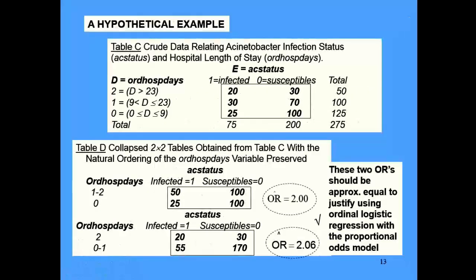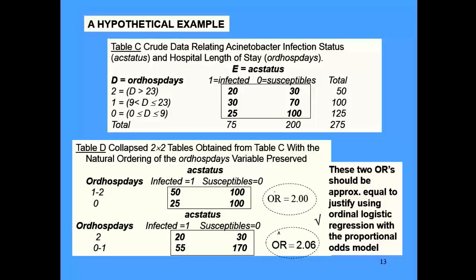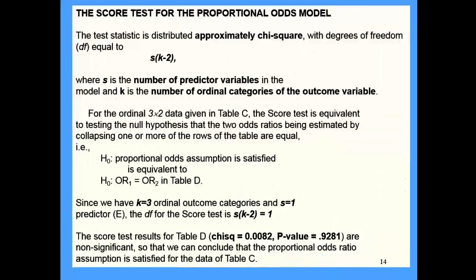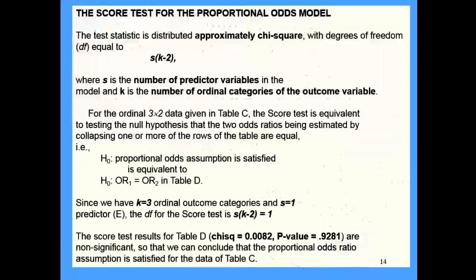The score test is built into proc logistic when you run ordinal logistic regression using the proportional odds model - it automatically appears in the output. It's a chi-square statistic. The degrees of freedom is S times (K minus 2), where S is the number of predictive variables in the model and K is the number of ordinal categories of the outcome.